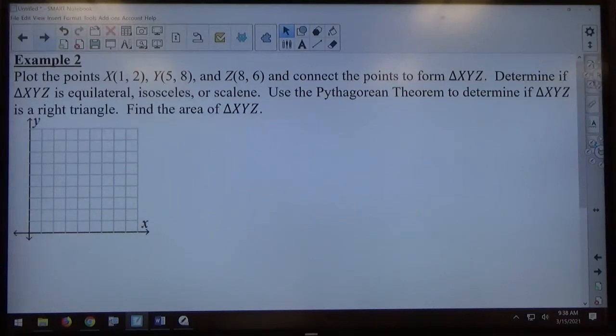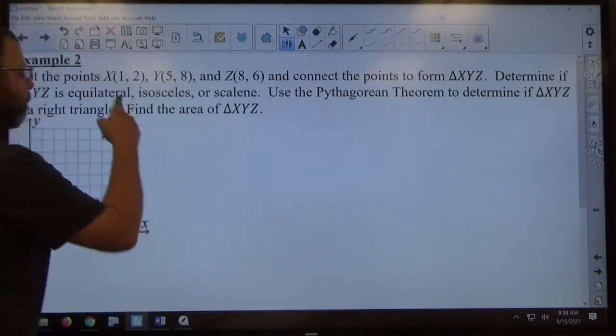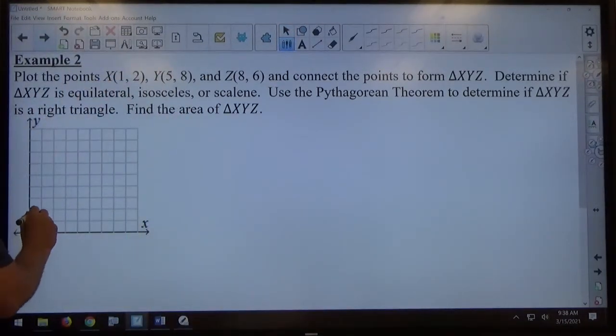For example 2, it asks us to plot some points X, Y, and Z, to connect the points to form triangle XYZ. So if I plot these points to start off with, point X is 1 right, 2 up. I'm going to put an X next to that one.